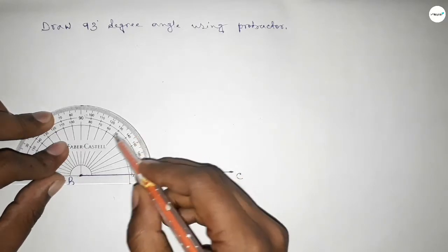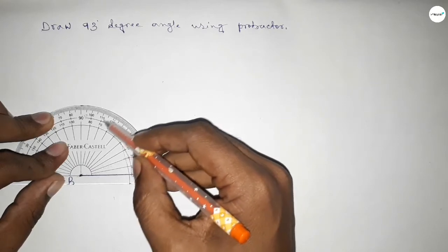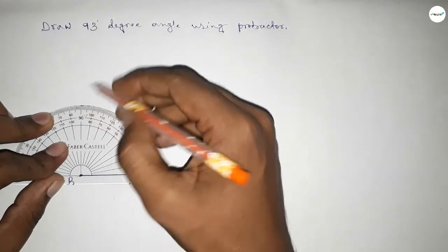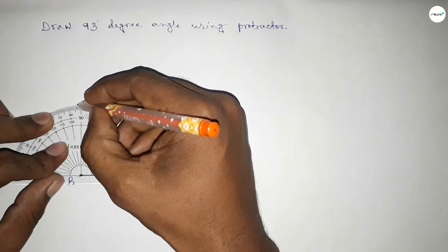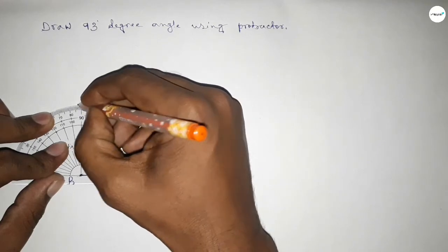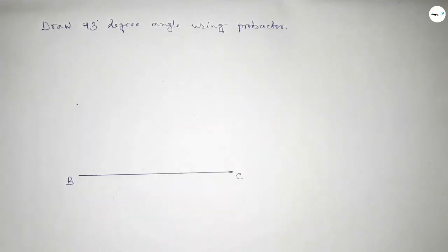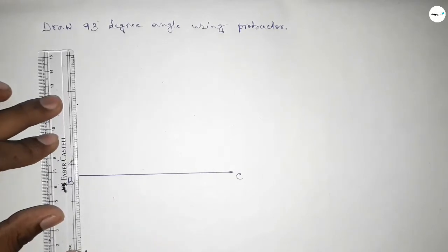91, 92, 93. So this is 93 degree angle. Now joining this side to get 93 degree angle.